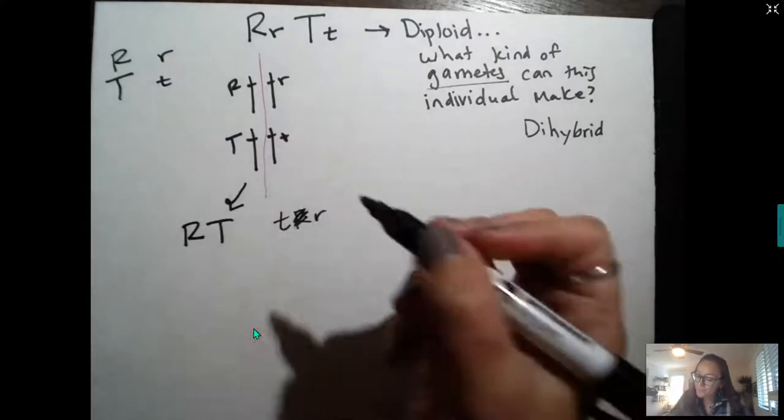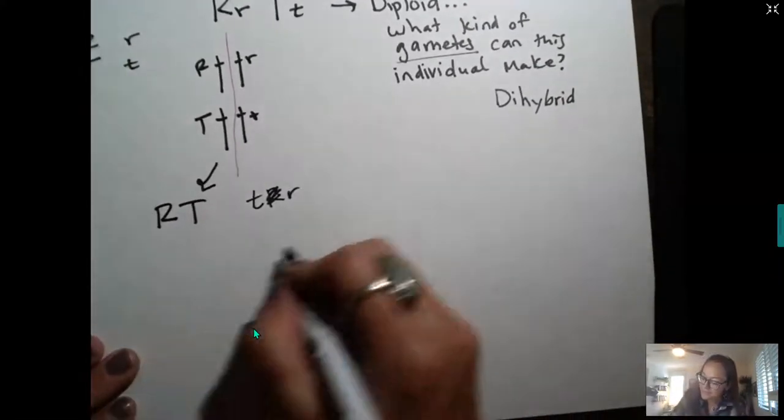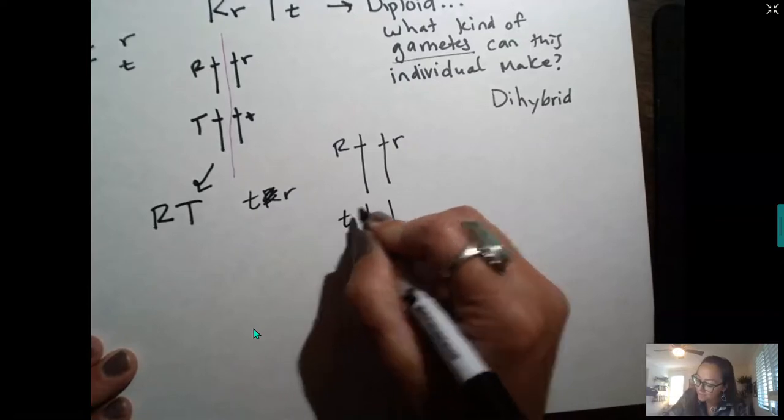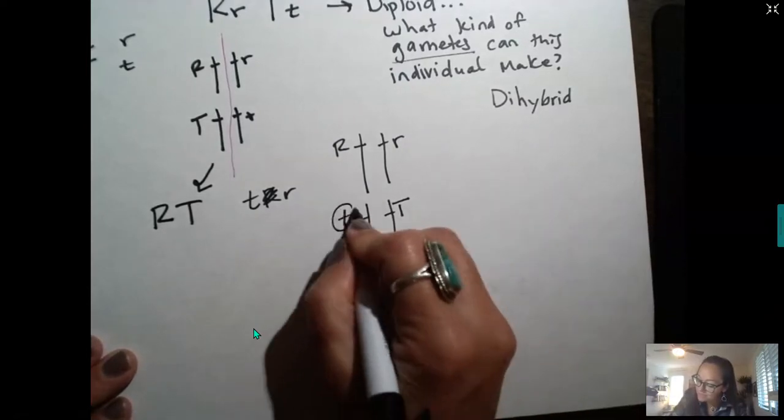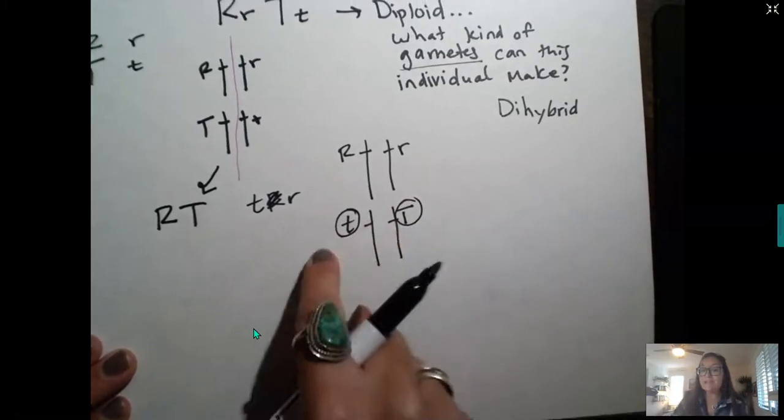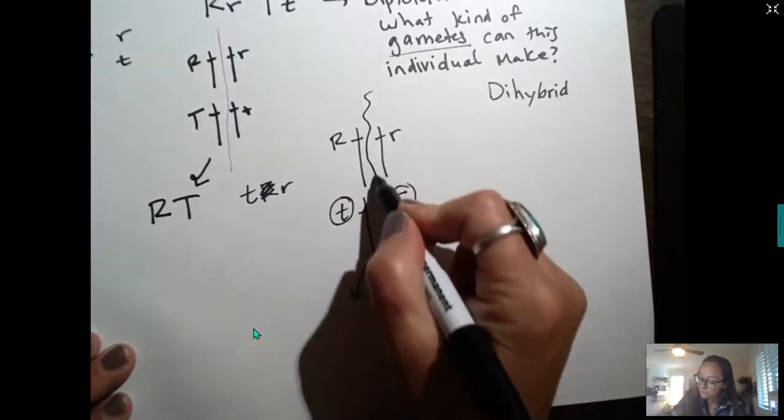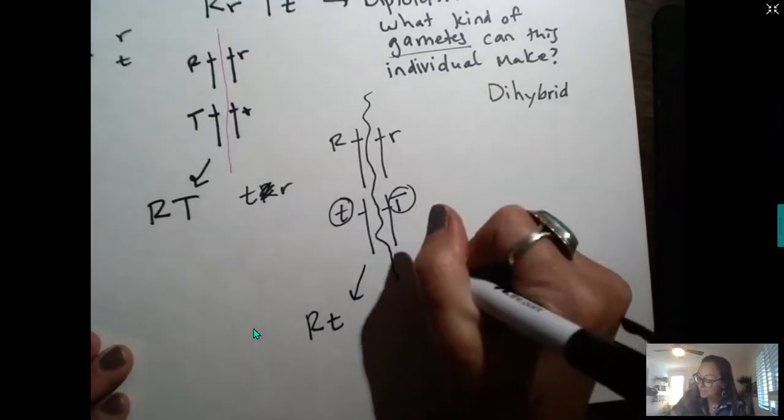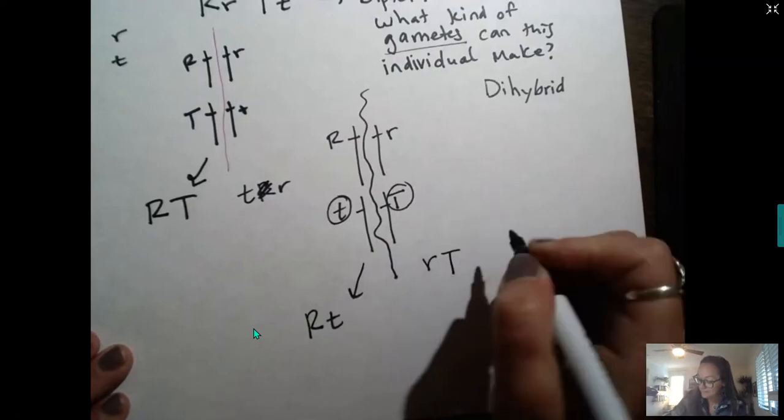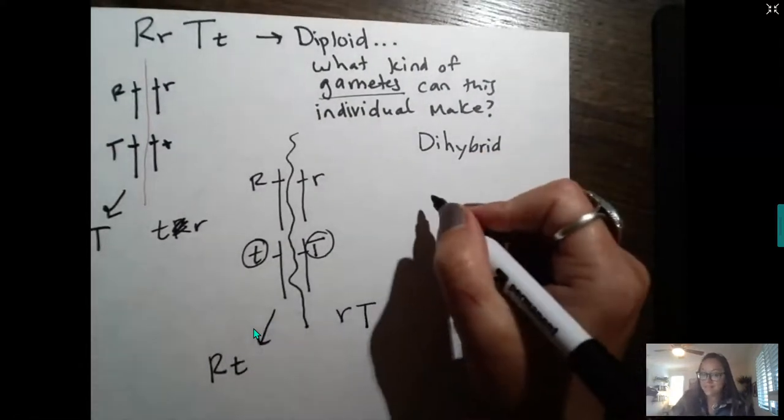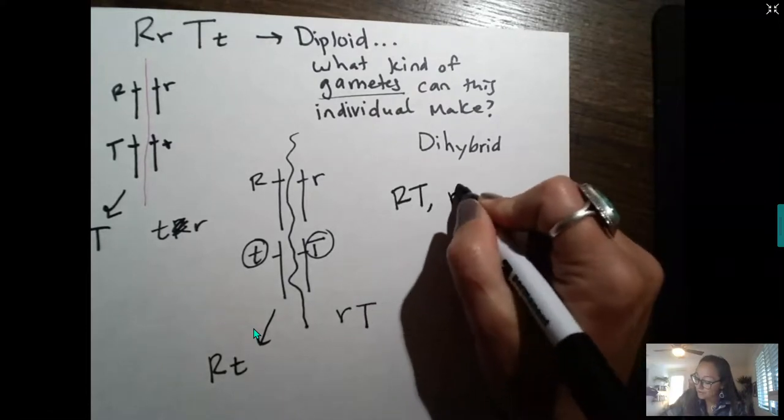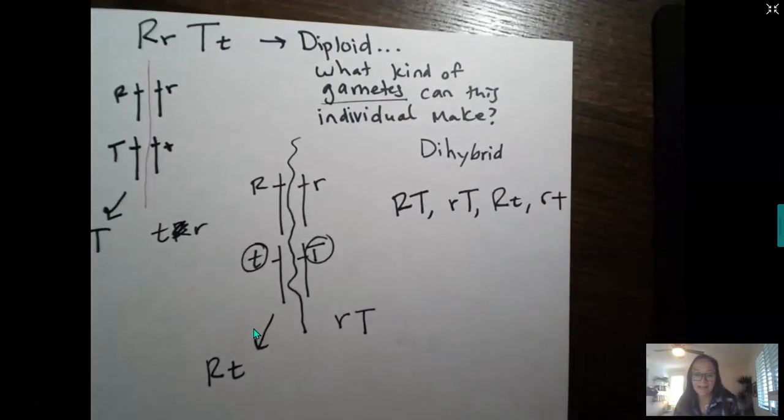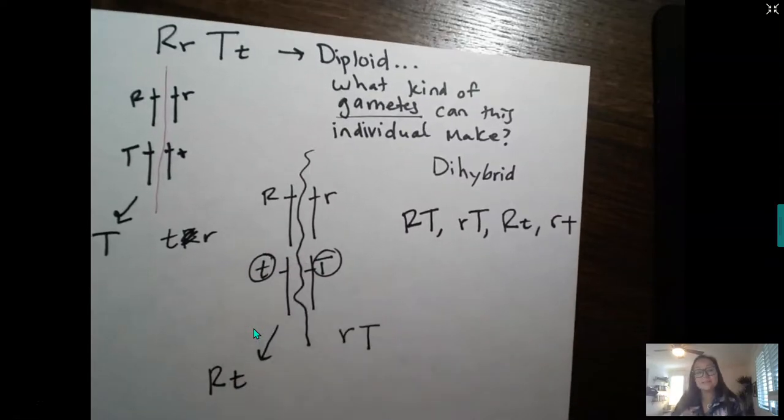But however, we know that due to Mendel's second law of independent assortment, that this is also possible. So when the homologous pairs align along the metaphase plate, you could easily have this recessive allele on the left-hand side. So now when gametes are formed, some gametes could end up with a dominant R and a recessive T, and then a recessive R and a dominant T. So when we look at what gametes can this individual make, these are their possibilities, due to Mendel's Law of Segregation as well as independent assortment for genes that are on separate chromosomes.